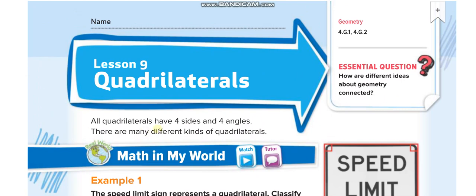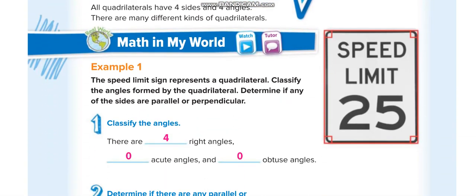All quadrilaterals have four sides and four angles. The last lesson was about triangles, where we had three sides and three angles. Here we have four sides and four angles. There are many different kinds of quadrilaterals — we will show you on the next page. Look at this one: it has four sides and four angles.